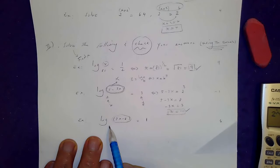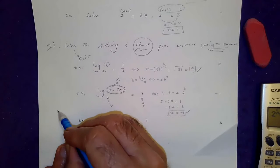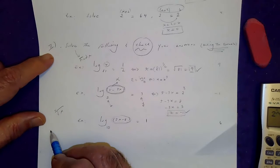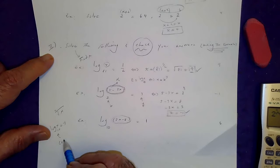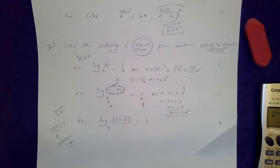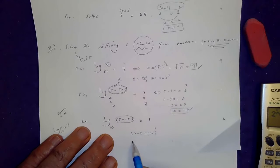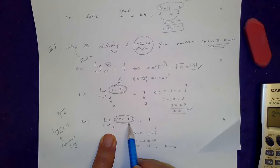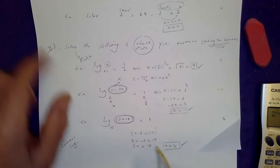Sometimes there is no base shown for the log, so the assumption is base 10 — just like radicals where no index means index 2. Logs with base 10 are called common logs. So for log(3x minus 8) equals 1, the logarand is 3x minus 8, base is 10, so 3x minus 8 equals 10 to the 1, giving 3x equals 18, and x equals 6. Checking: 3 times 6 is 18, and 18 minus 8 is 10 — positive, so we are good to go.